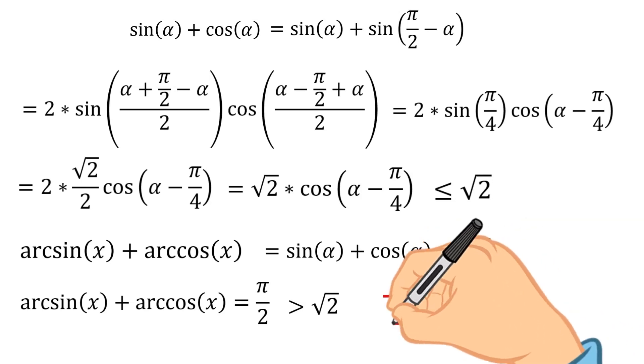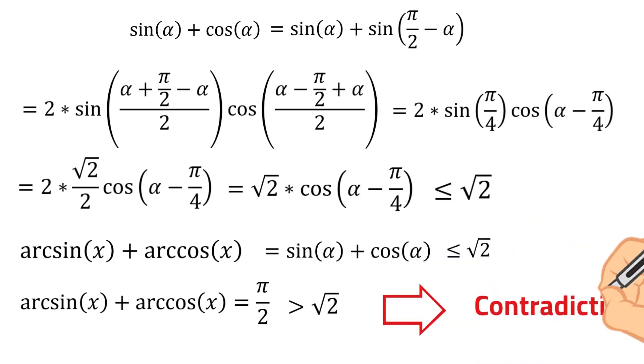And here, we have arrived at the contradiction, because if the original identity holds, then the sum of arc sine and arc cosine should be less than or equal to square root of 2. But it contradicts the basic definition of the arc sine and arc cosine, therefore, the original identity is not possible.